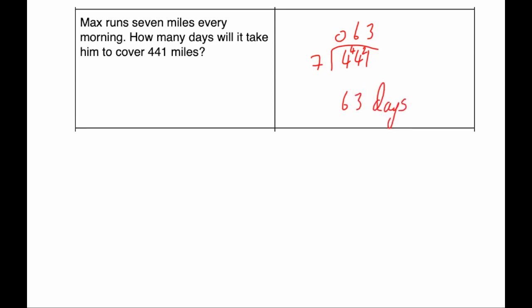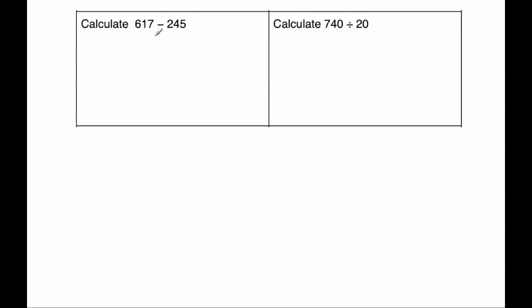Right, our next question. We've got a subtraction question. We've got 617 subtract 245. So lining them up in columns. 7 take away 5 is 2. 1 take away 4 we can't do, so we'll borrow from the 6. We'll call that a 5 and that'll be 11. 11 take away 4 is 7. And 5 take away 2 is 3. So the answer would be 372.